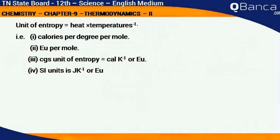The unit of entropy is heat times temperature to the power minus one, that is calories per degree per mole. The CGS unit of entropy is calories per kelvin or entropy units per mole. The SI unit is joules per kelvin minus one or entropy units.